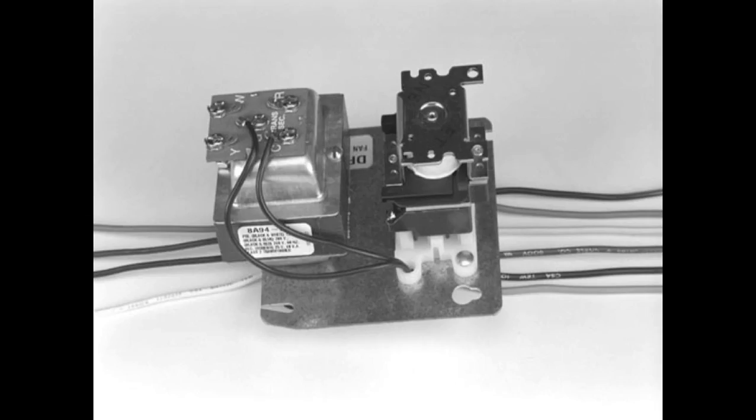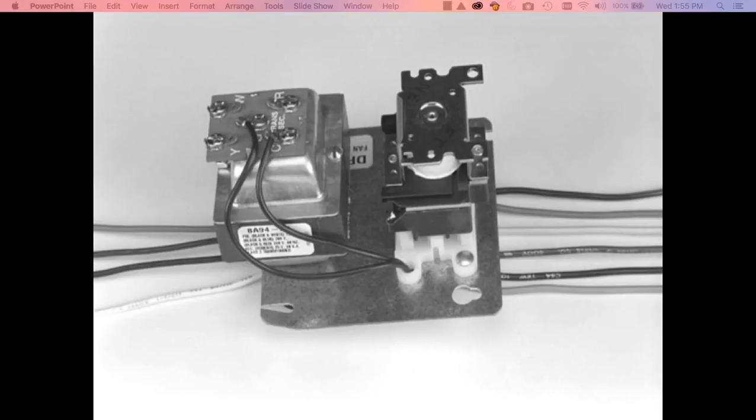And finally, we leave off with a picture of a fan center, how you would see it in a box. Your line voltage connections are the wires on the back of it. Your control voltage connections are open. Everything is labeled, and the colors of the wires on the back side match the schematic in the box. And that's all there is about fan centers.